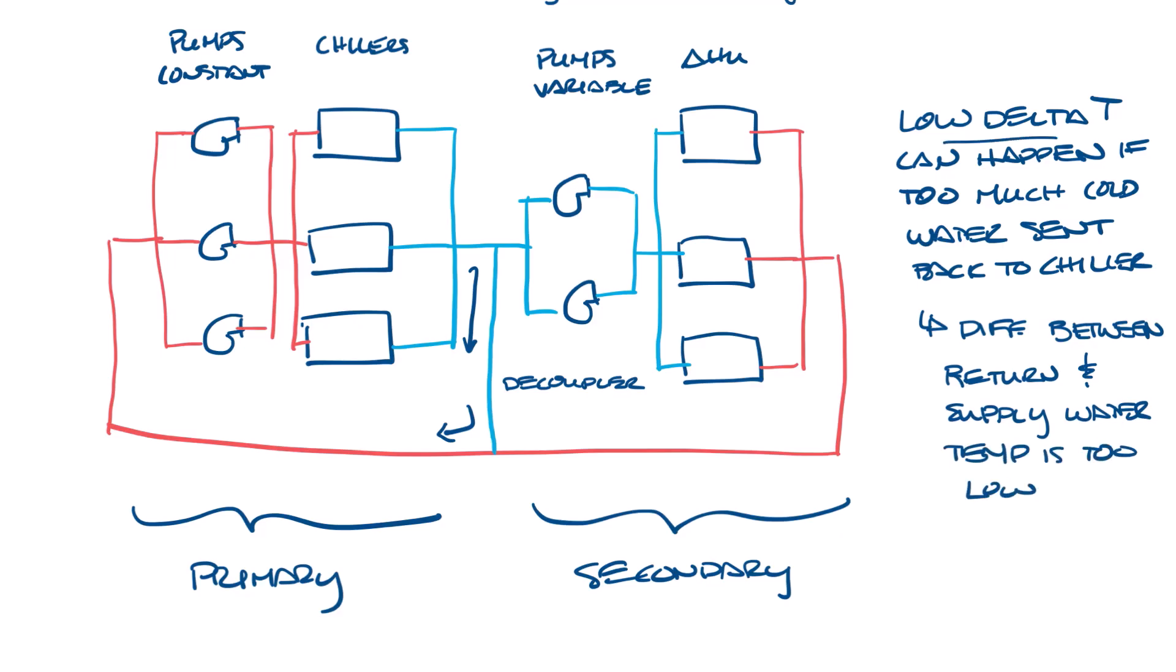The secondary pumps could actually be running faster than the primary pumps. And in that case, the flow would be reversed in the decoupler this way. But this is not optimal for performance.